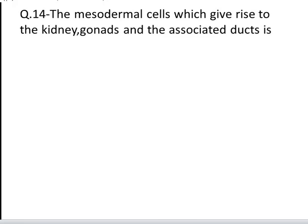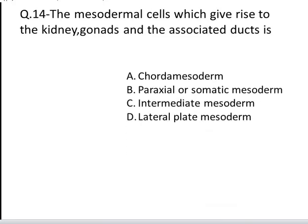The next question is: the mesodermal cells which give rise to the kidney, gonads, and the associated ducts, is. These are your four options: A. Paraxial mesoderm, B. Parietal or somatic mesoderm, C. Intermediate mesoderm, and D. Lateral plate mesoderm. Yes, the correct answer is C, Intermediate mesoderm.